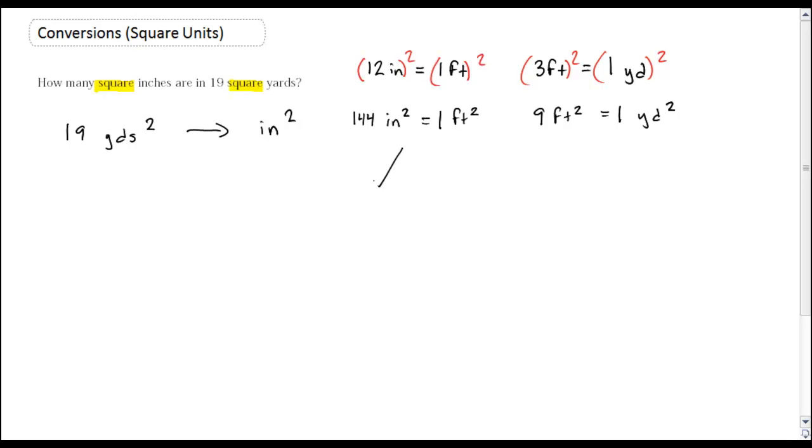And remember, this gives me two fractions. So 144 inches squared over 1 foot squared, or 1 foot squared over 144 inches squared. This gives me 9 square feet over 1 square yard, or 1 square yard over 9 square feet. It's just going to depend on what you want to use. So let's do this problem. 19 square yards.